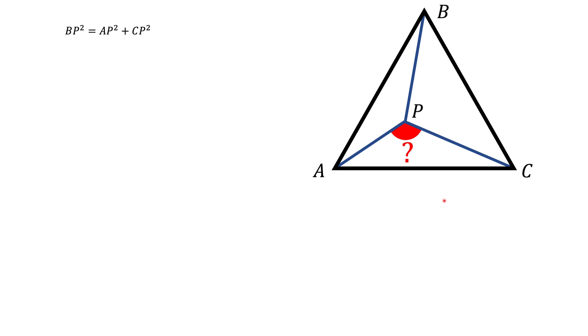Here we have an equilateral triangle ABC and inside of this triangle we get point P that satisfies this condition: BP squared equals AP squared plus CP squared. We're asked to find the angle APC.